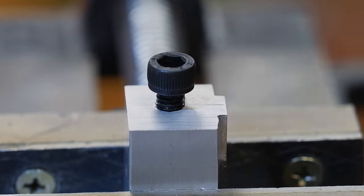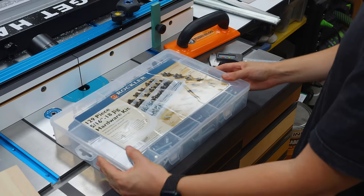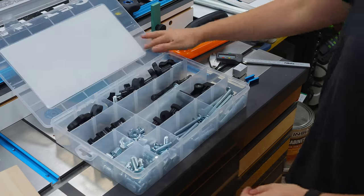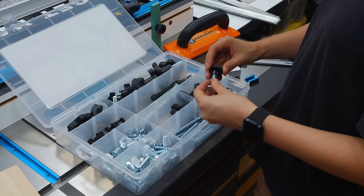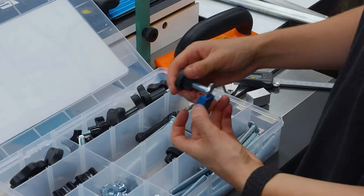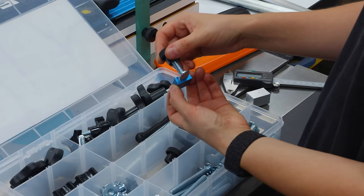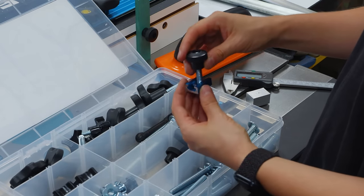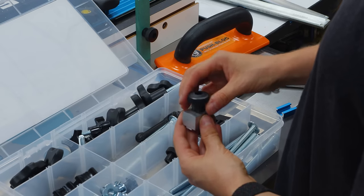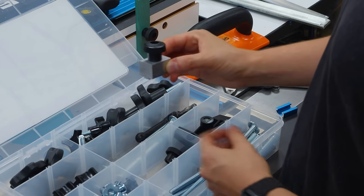I selected the T-track bolts and knobs for both the stops and fence from this Rockler Jig hardware kit. These are the smaller ones and seem great to use with the fence. They look too big for the stop blocks, but that's what I have for now and they will work just fine.